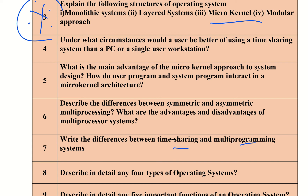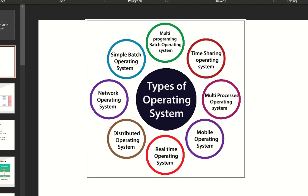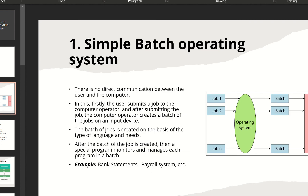You should be able to describe in detail any four types of operating systems. All different types will be discussed. The types of operating systems are: simple batch operating system, multiprogramming batch operating system, time-sharing system, multiprocessing operating system, mobile operating system, real-time operating system, and distributed operating system.